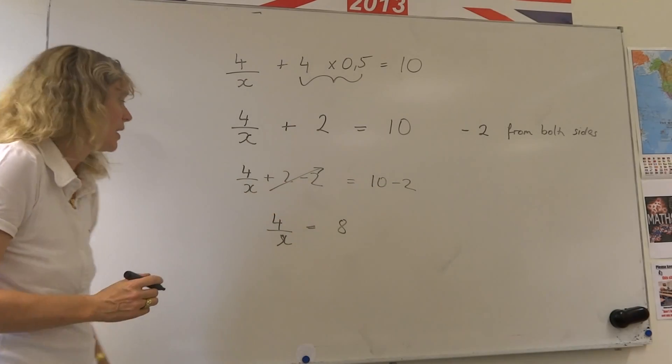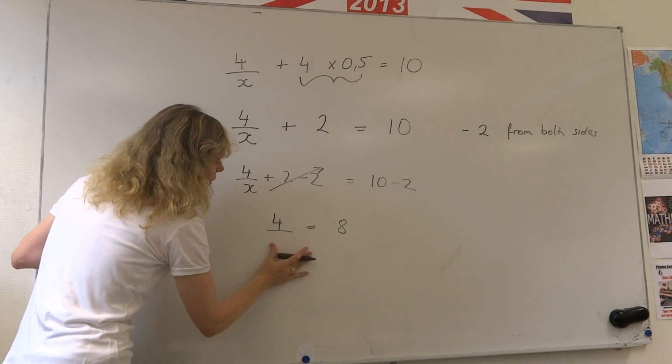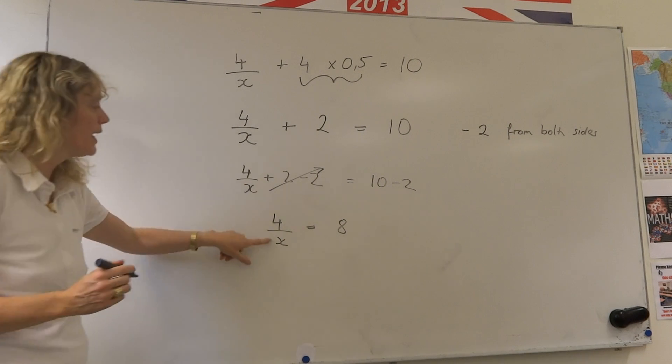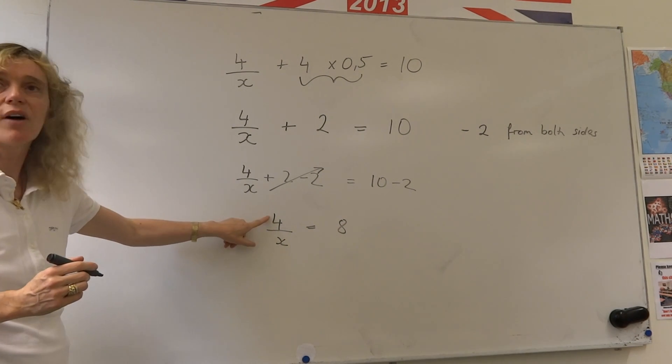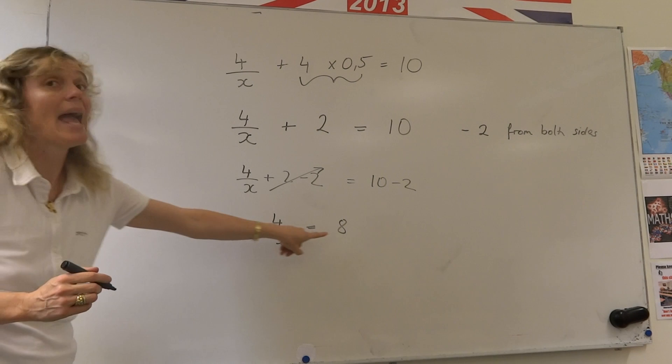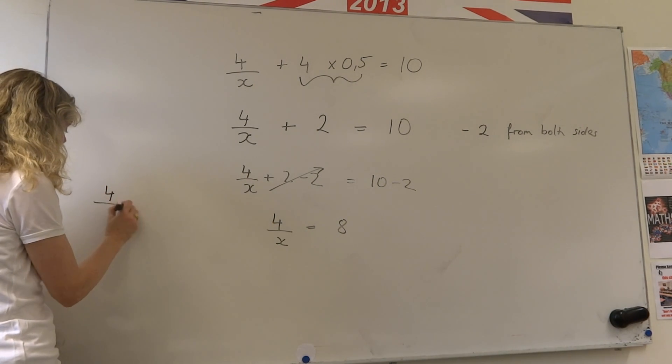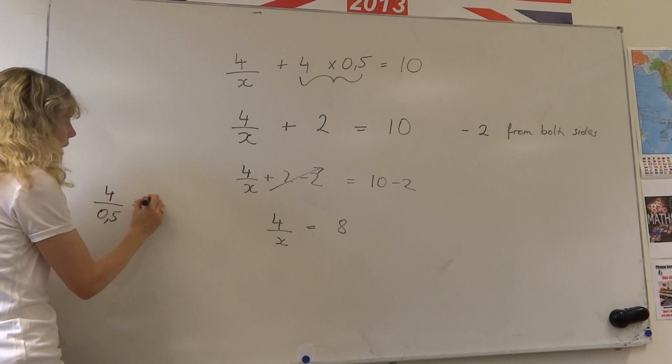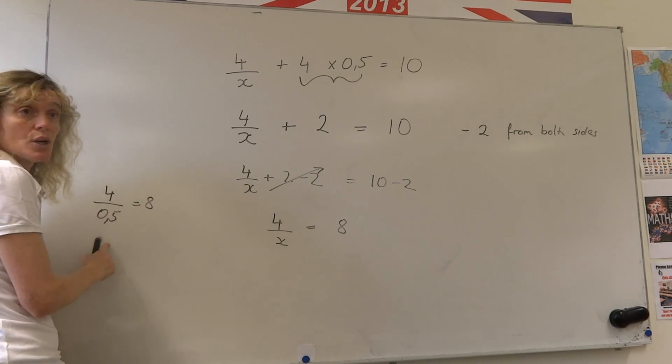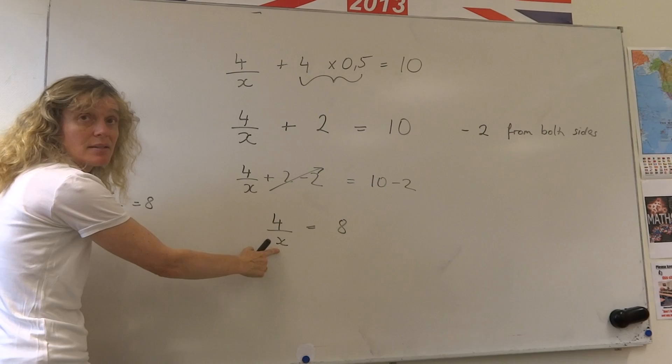10 minus 2 equals 8. So I want to think of what number can I divide 4 by to get 8 as my answer. Well I know that if I divide 4 by a half, I'd get 8. So the answer to what x is, is a half.